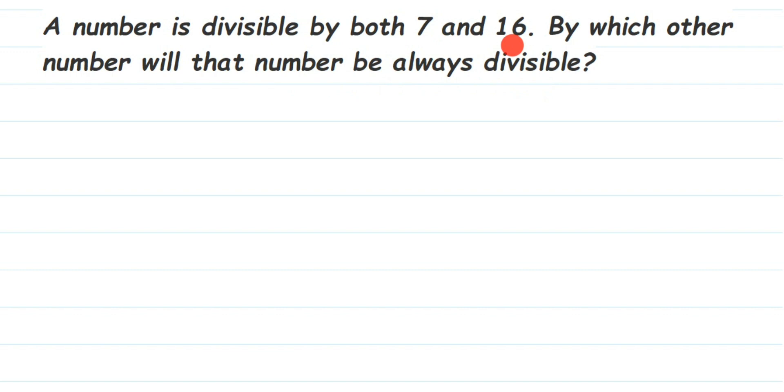Whenever you get this type of question, we have to find out the factors of both 7 and 16, and then find the common factor - the number which is present in both 7 and 16. That number will divide these numbers. We're going to find out the factors of 7 first.